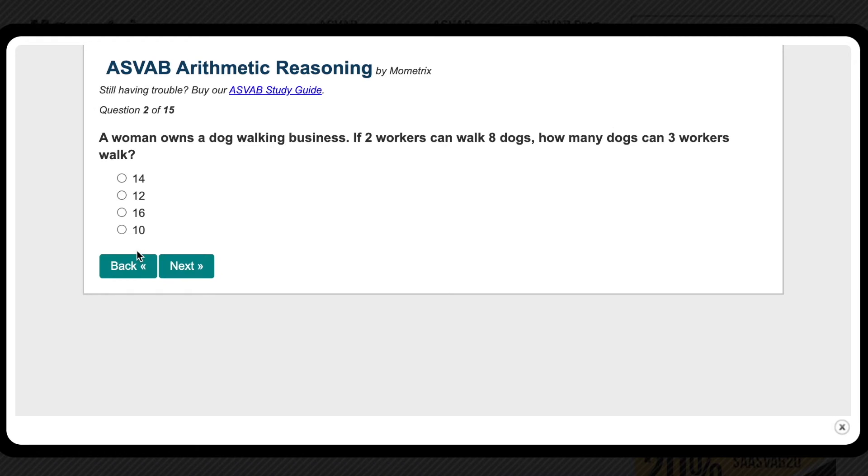For a third question, I wanted to do a problem on ratios. Again, let's first just try to read the problem and understand what we're trying to find. The question is, a woman owns a dog walking business. If two workers can walk eight dogs, how many dogs can three workers walk? Now this is the question we're trying to figure out.